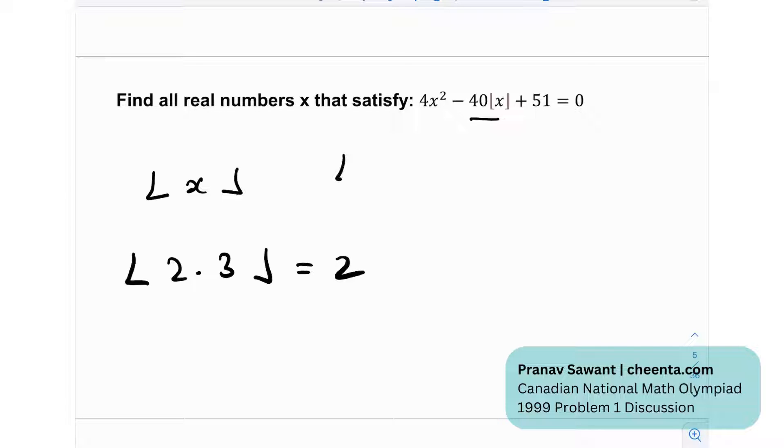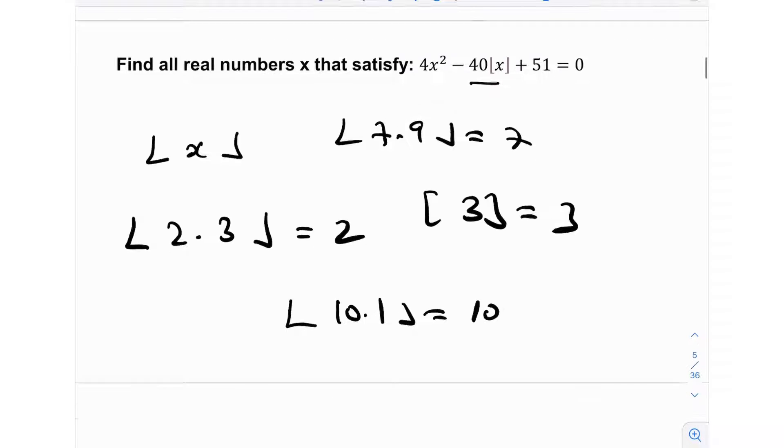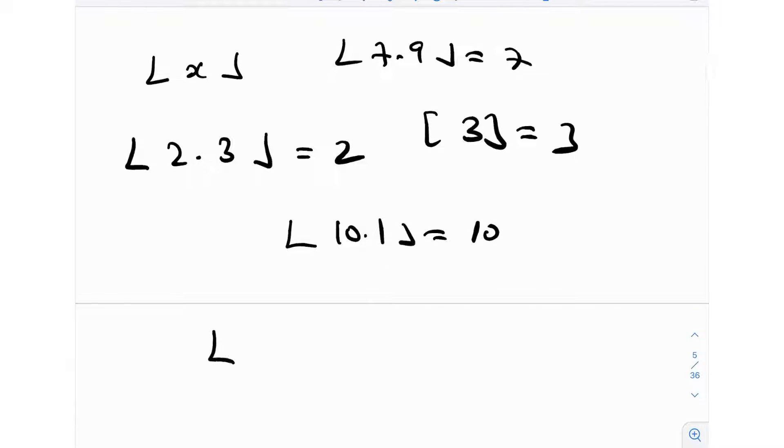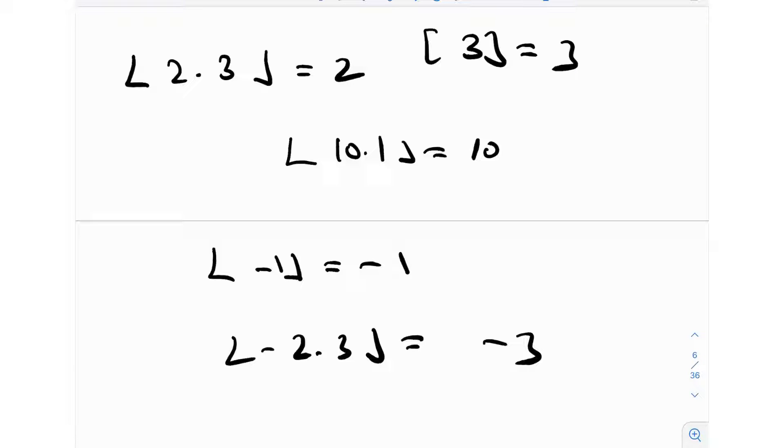Floor of 2.3 is 2, floor of 7.9 is 7, floor of 3 is obviously 3, floor of 10.1 is 10. Similarly, the floor of negative 1 is negative 1. The floor of negative 2.3 will be negative 3. It is the greatest integer less than or equal to x.